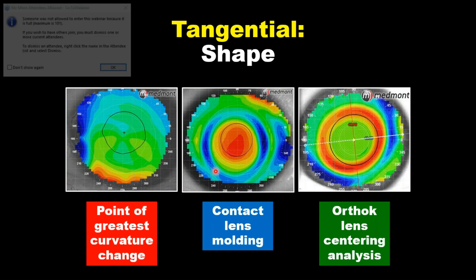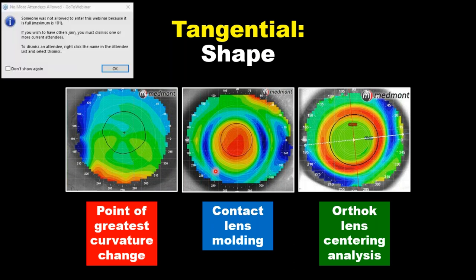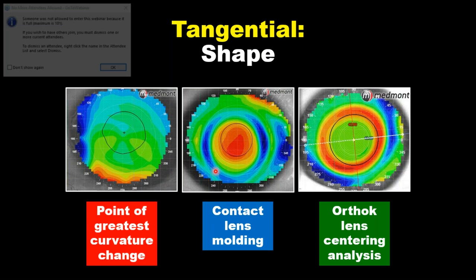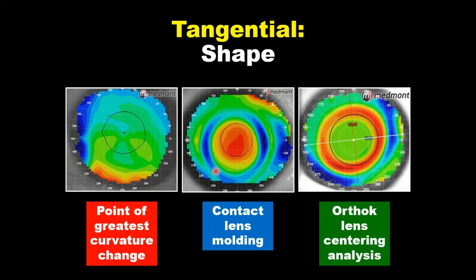El mapa tangencial es capaz de decirnos dónde es el cambio más radical o más curvo, nos da localización, área y severidad — esa es la parte importante. In our middle image we see the bearing of the rigid contact lens — the molding that the rigid contact lens creates on the anterior surface. So the tangential map is describing to us corneal molding.